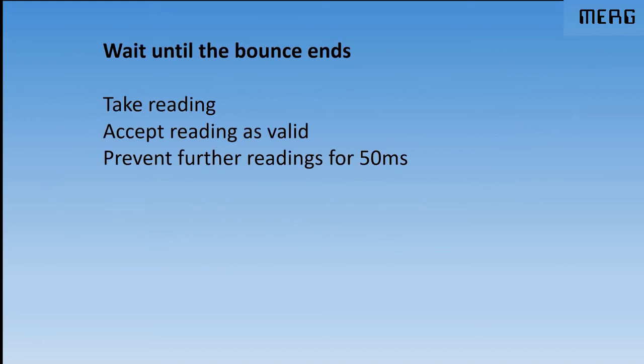So one option commonly used to take a reading and accept it as valid. The very first pulse you saw coming in was high, it must be high. And ignore any bounce whatsoever. Just carry on. In fact, stop taking any more readings for the next 50 milliseconds so you don't get any extra. Just accept the very first one as valid and reject anything else for the next 50 milliseconds. And then you're clear of any bounce.